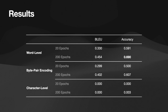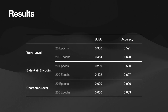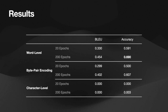Our experiments produced the following results. The word-level models performed best, followed by the byte-pair model, with the character-level model being unable to learn to generate any meaningful results, which was likely a result of insufficient training data. Each model performed better with increased training time, as expected.